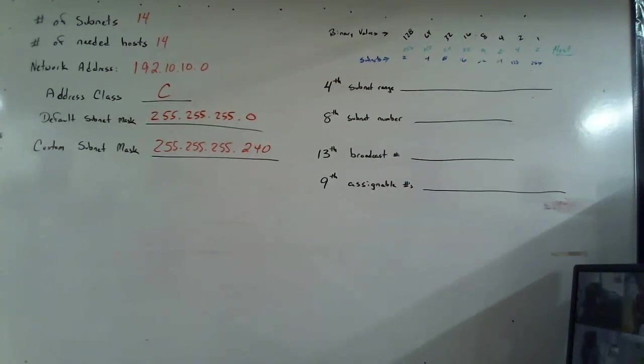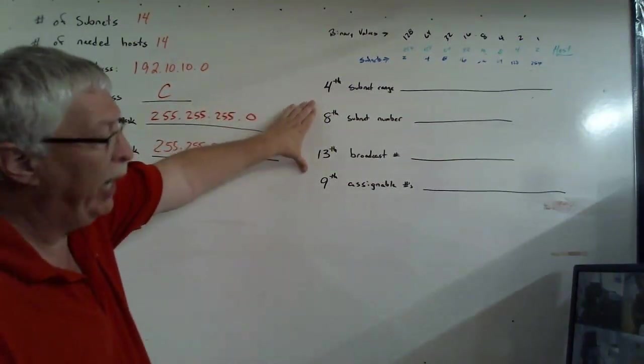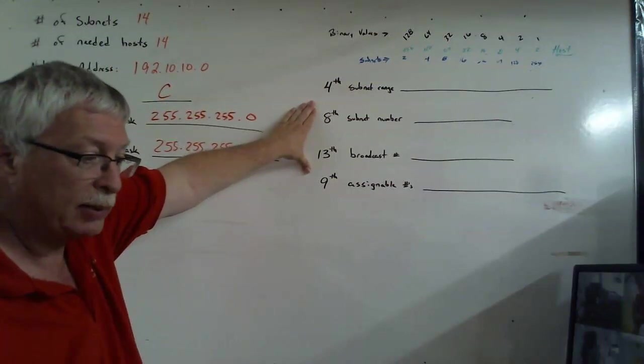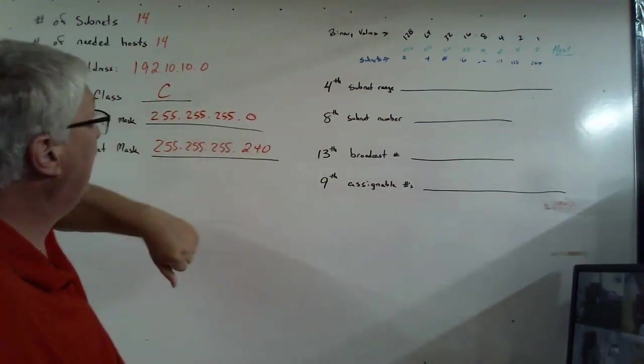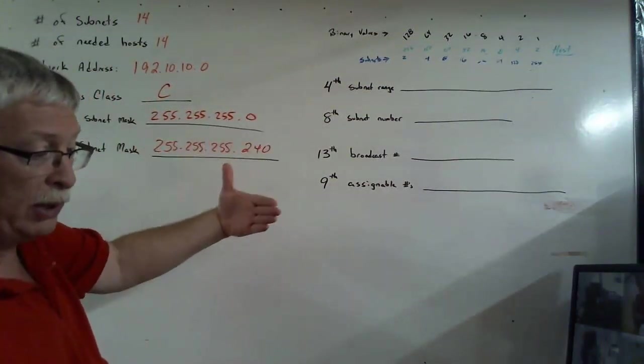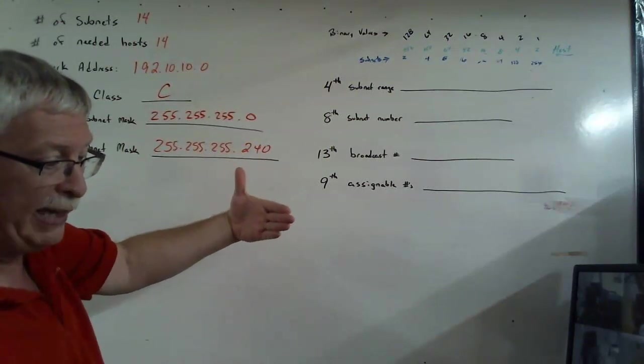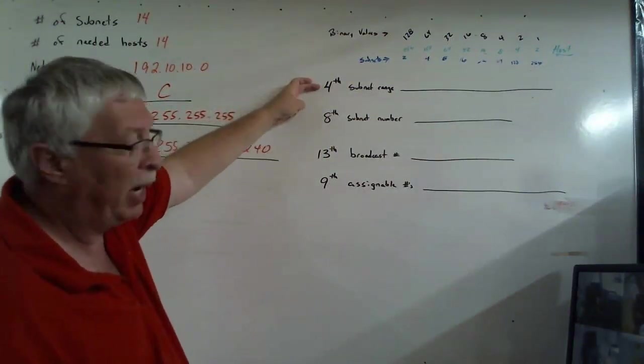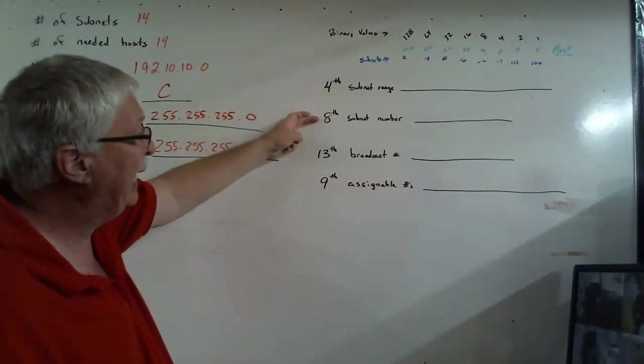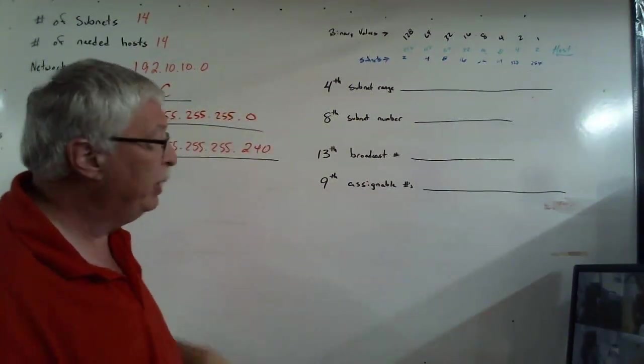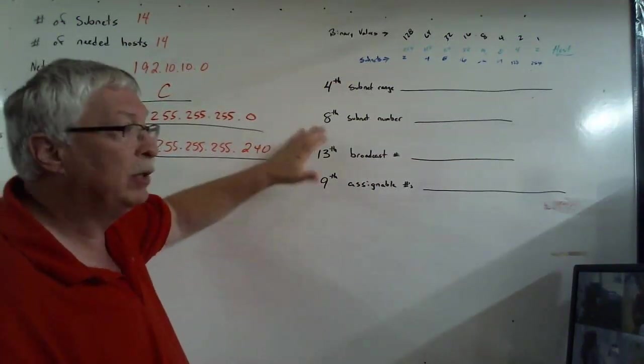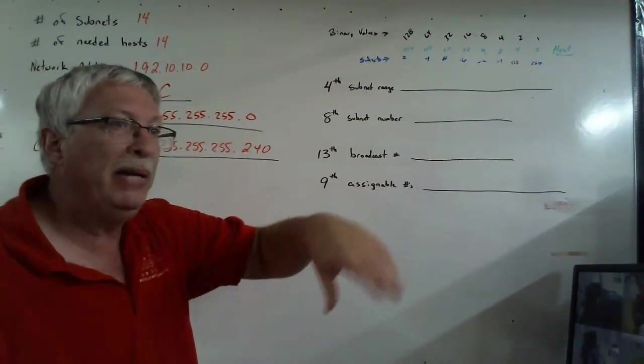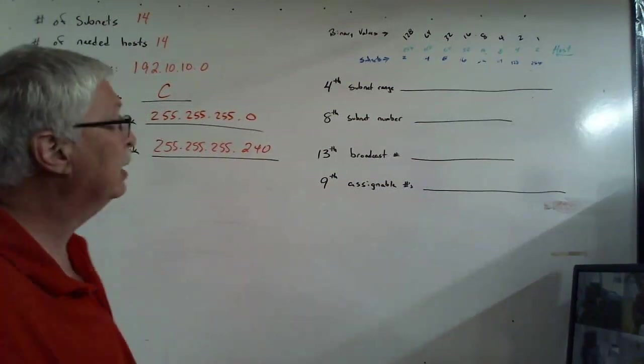Okay, we're back. We are going to now take it to the next level. And so, when we're finished, we have three more questions we're going to ask. And we know that we had 14 subnets we needed. We ended up with 16. But we didn't want to know specifics about the fourth subnet, the eighth, the thirteenth, and the ninth. Because we need to know those informations for each of our little mini networks, which is what a subnet is.